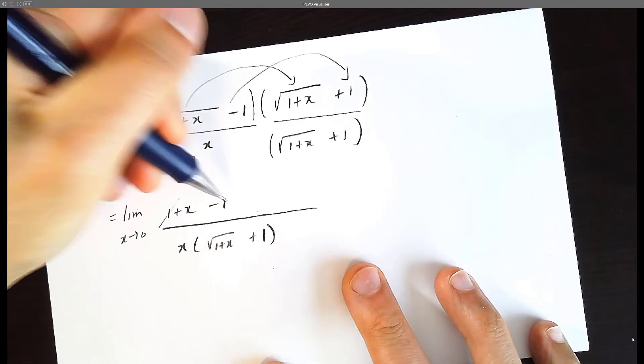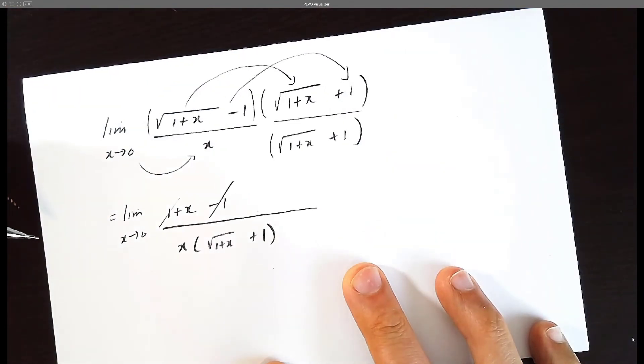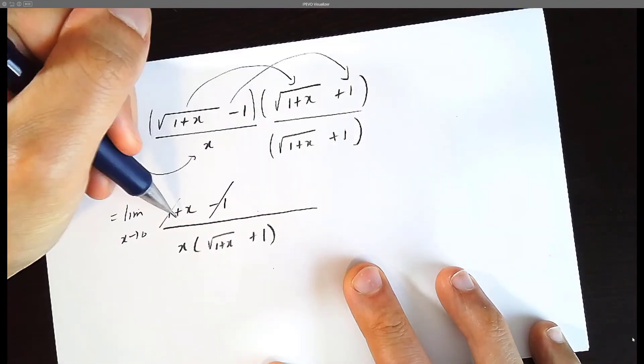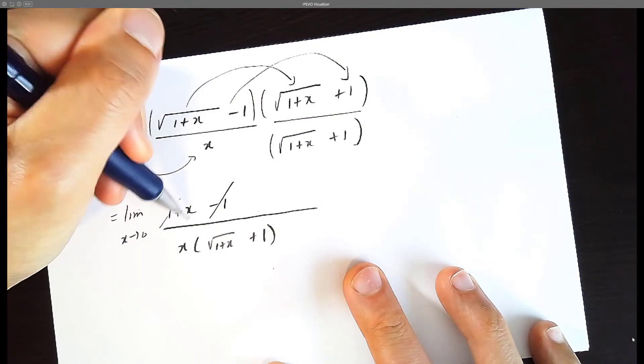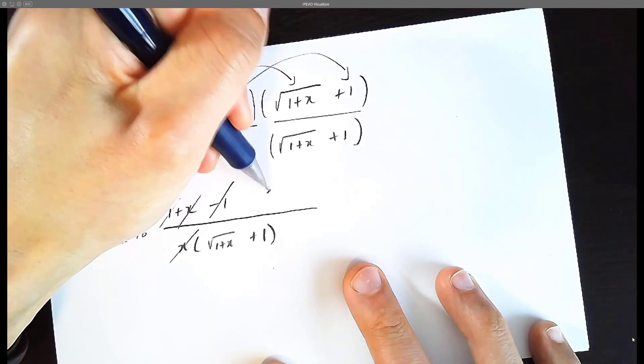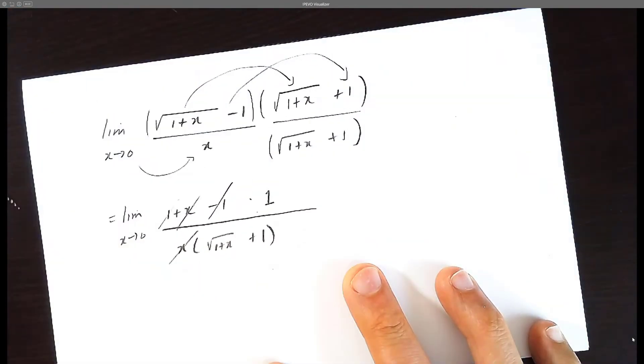And as you can see, the positive one, the negative one, they cancel. And so do the x's. We have x and x here, they also cancel. And we leave multiplied by one up here, all by itself.